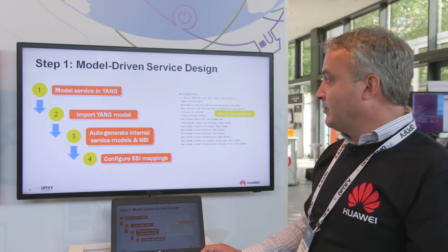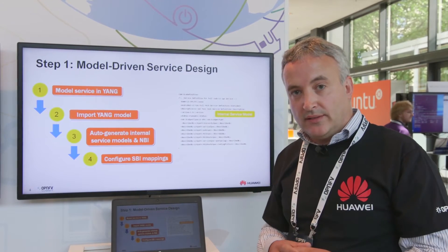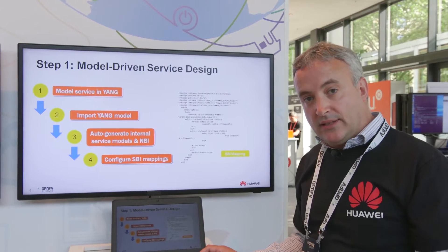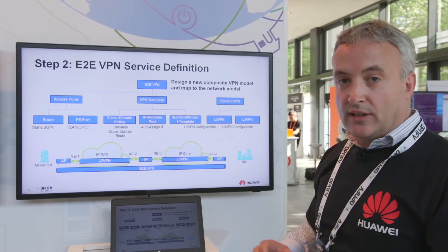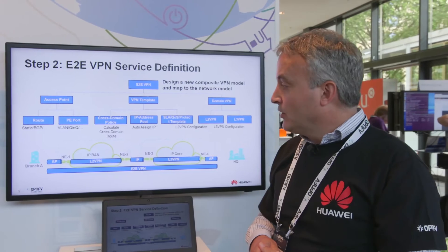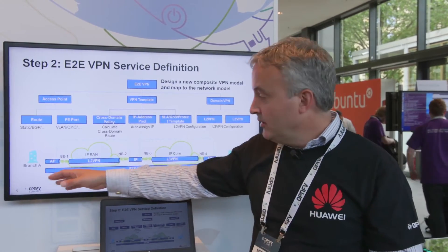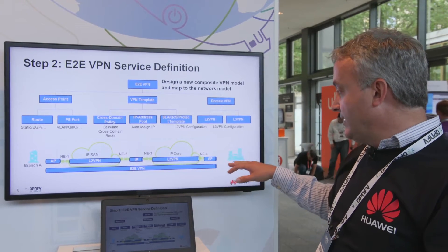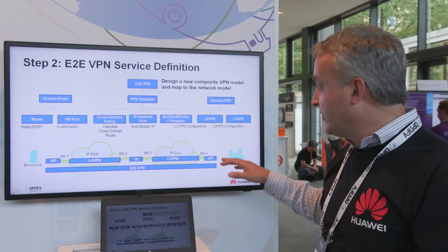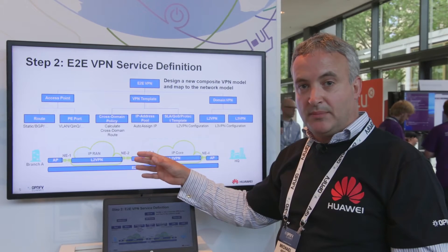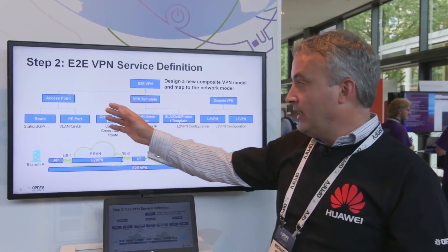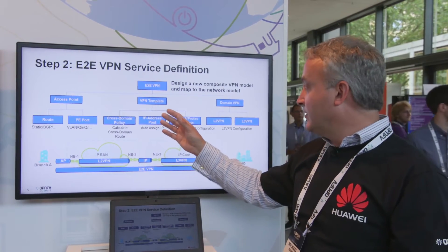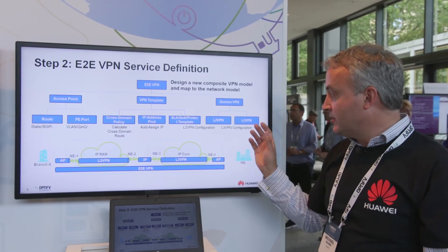When we import the YANG into the orchestrator we convert it into an internal model representation, then map that into the southbound network and resource layer. The service offering in this demonstration consists of a service that transits from the branch site across the IP RAN and the IP core. It uses a Layer 2 VPN in the RAN and a Layer 3 VPN in the IP core, and in the data center we'll be running certain value-added services. There are common specifications for the VPN service itself, and domain-specific specifications for both the Layer 2 VPN and the Layer 3 VPN.